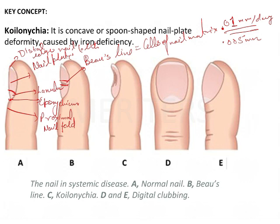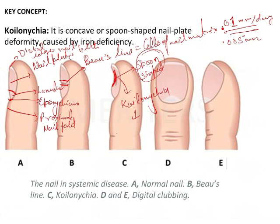There are certain concavities which are seen in the nails, and these concavities make the shape spoon-shaped. These spoon-shaped nails are seen in a lot of conditions, and this particular sign is known as koilonychia. If we talk about the deficiency specifically, it generally occurs in the iron deficiency condition.